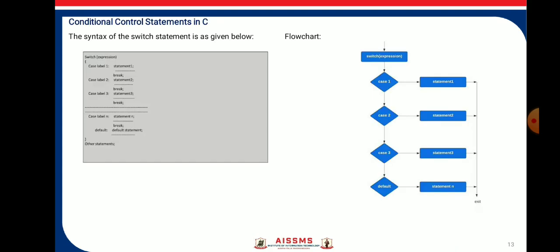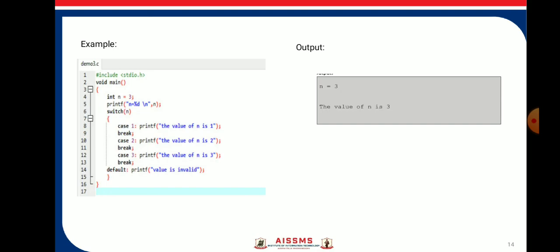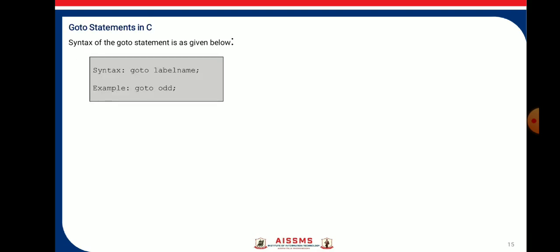Next is the conditional control statement, which uses the switch-case statement. Based on the value of the switch expression, the switch statement allows multi-way branching. Control is transferred to the matching case label and the statement under it is executed. If none of the cases match the switch expression, the default statement is executed. Here is the syntax, flowchart, and example of the switch statement.